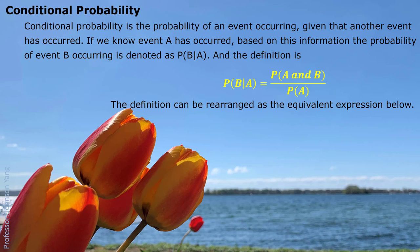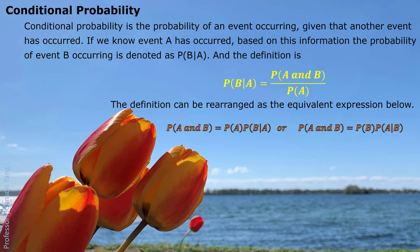The definition can be rearranged into an equivalent expression. We simply take the bottom part of the definition and move it to the other side. So P(A and B) equals P(A) multiplied by P(B|A), or equals P(B) multiplied by P(A|B). Both of these expressions are called the general rule of multiplication. You can apply them anywhere, anytime, if you have this kind of information.